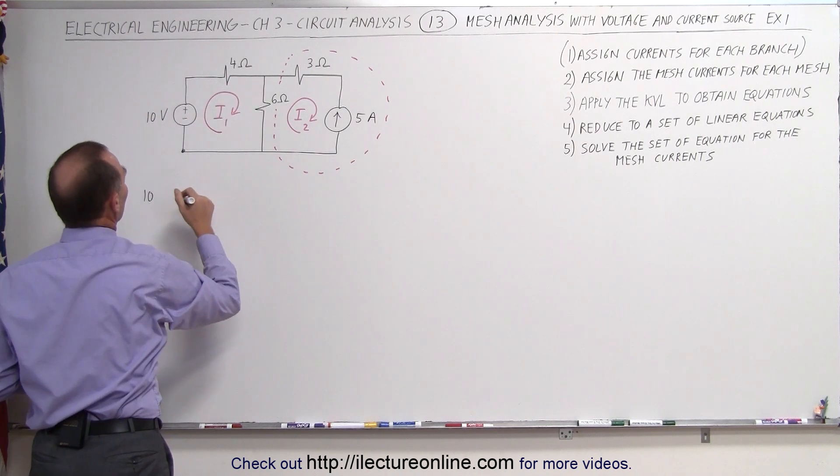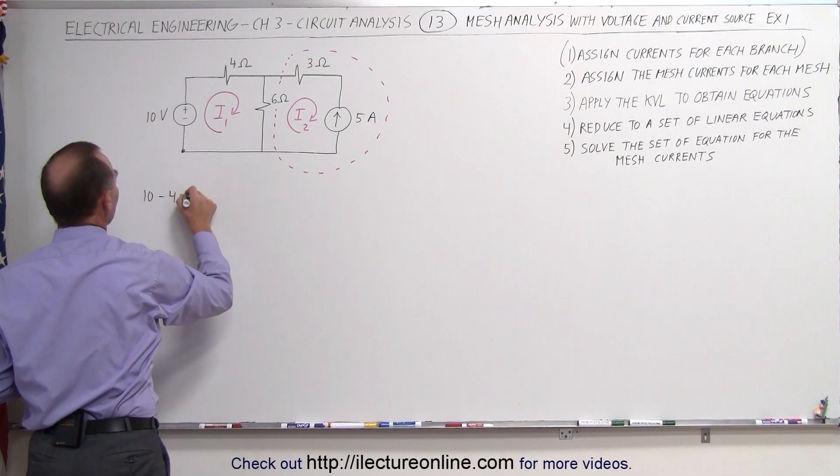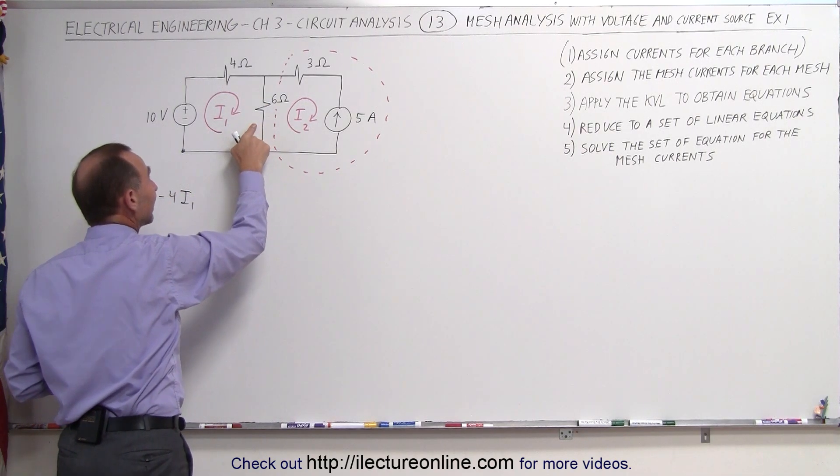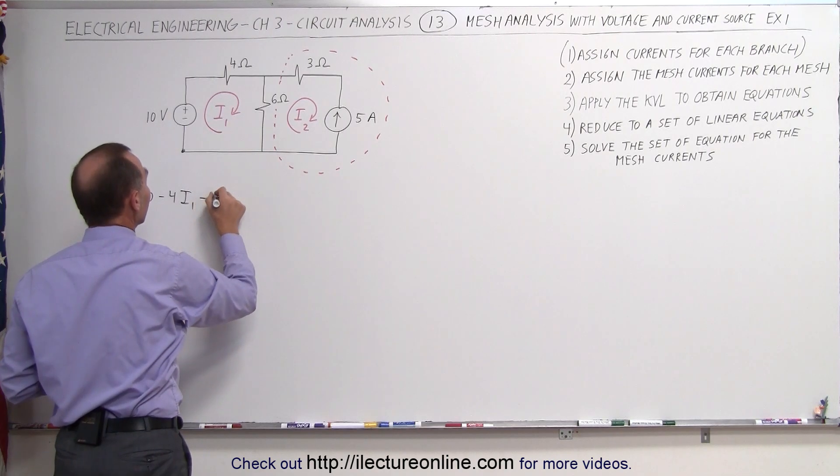We have a voltage drop across the 4 ohm resistor, minus 4 times I1. And we have a voltage drop across the 6 ohm resistor, at least relative to mesh current one. That's minus 6 times I1.